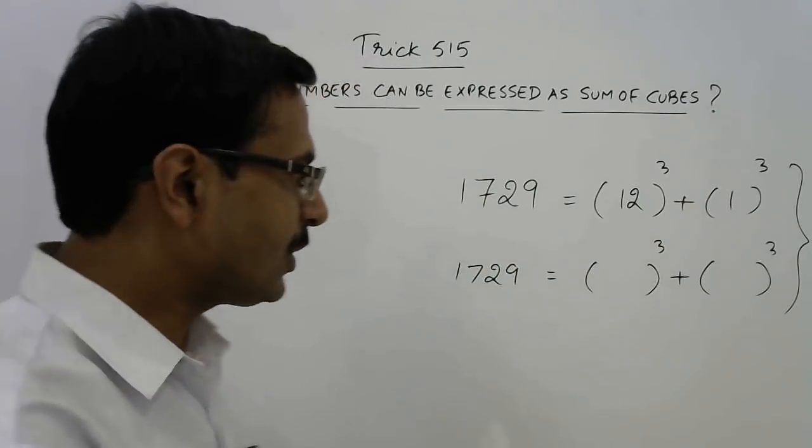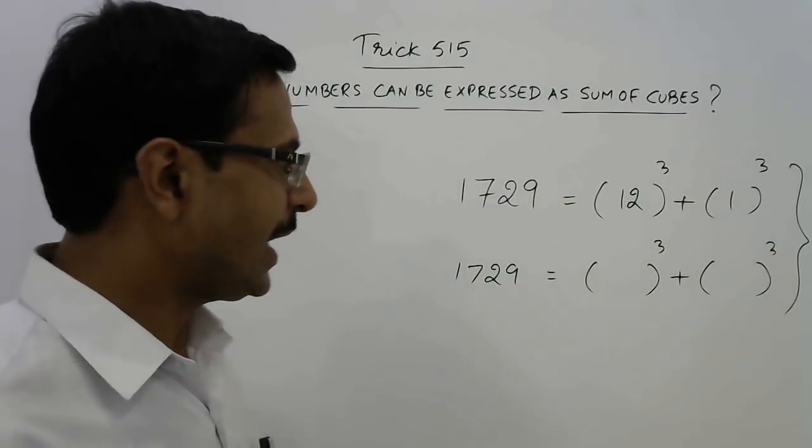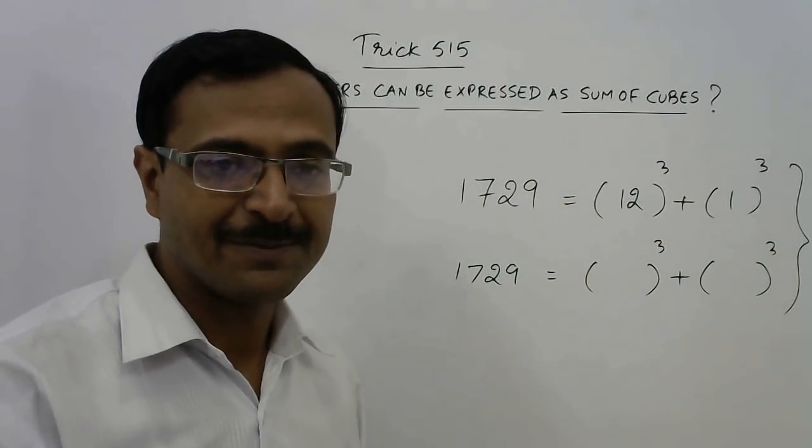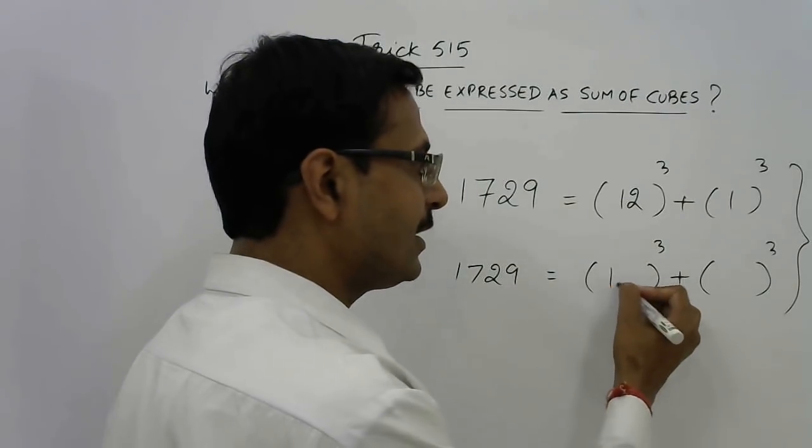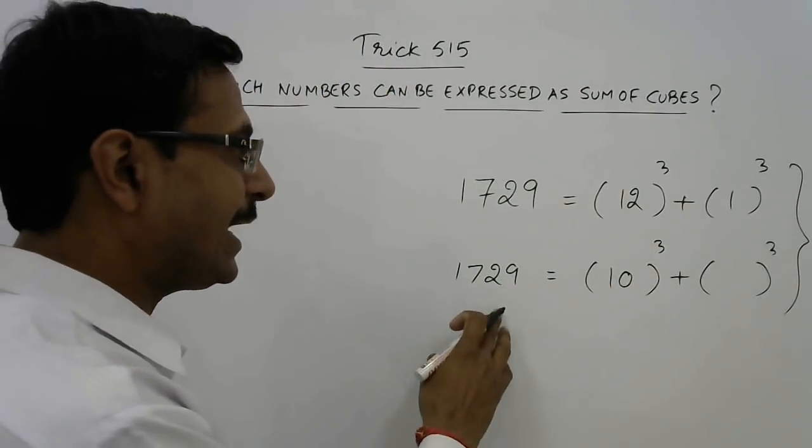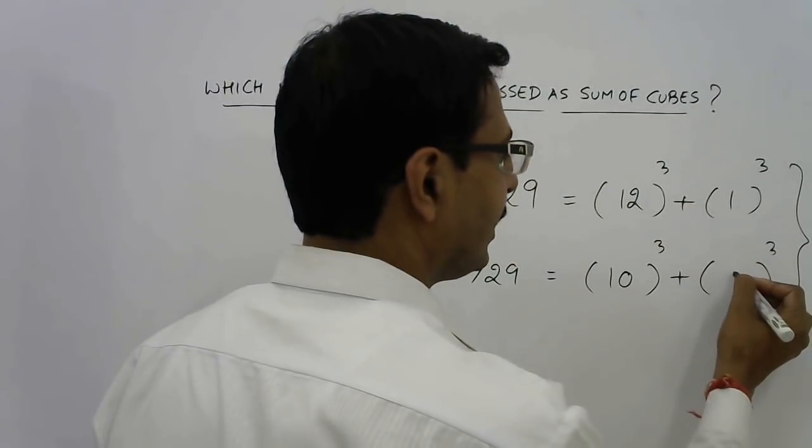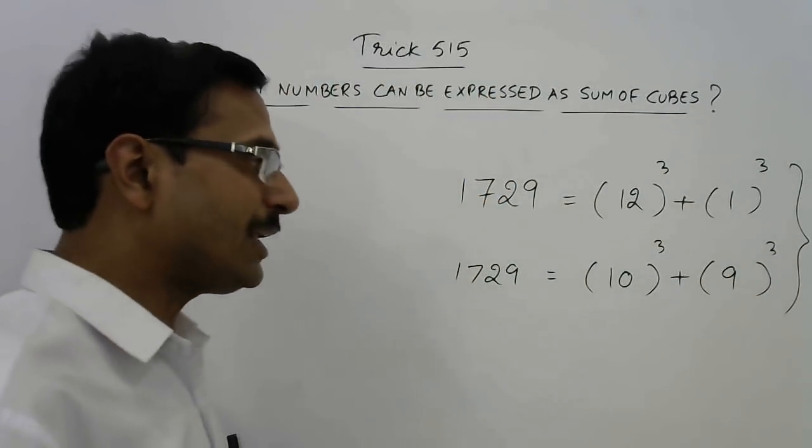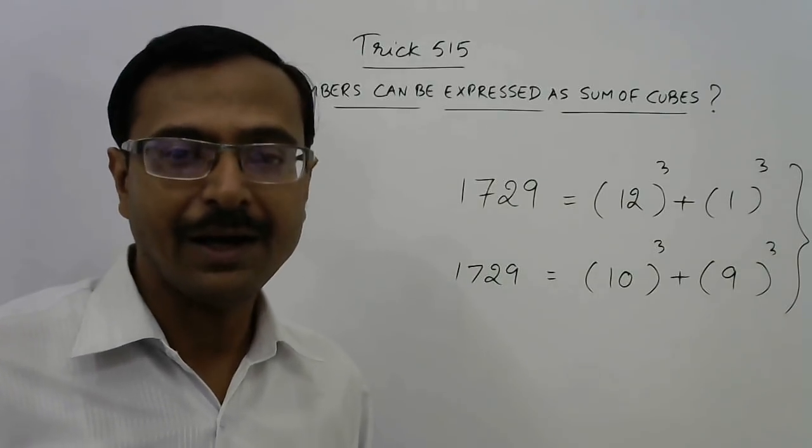See, 1729, just separate it as 1000 and 729. So 1000 is obviously a perfect cube, that of 10, and 729 is again a perfect cube, that of 9. So 10 cube plus 9 cube will give you 1729 again.